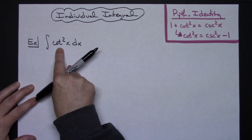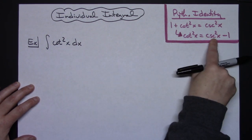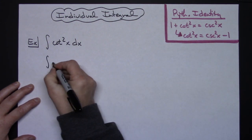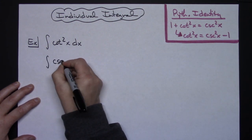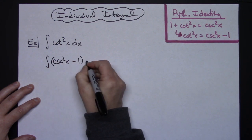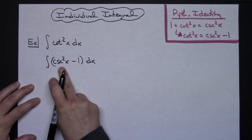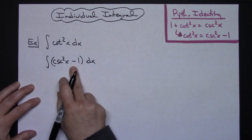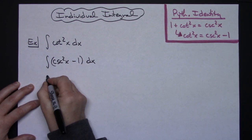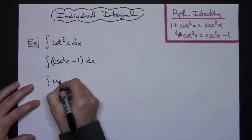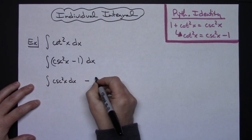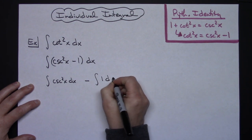So that's what I'm going to do right here: cotangent squared x I'm going to replace with cosecant squared x minus 1. So this integral becomes the integral of cosecant squared x minus 1 dx. Now I've got an integral here with the subtraction sign, so I can integrate both of these individually — the integral of cosecant squared x dx minus the integral of 1 dx.